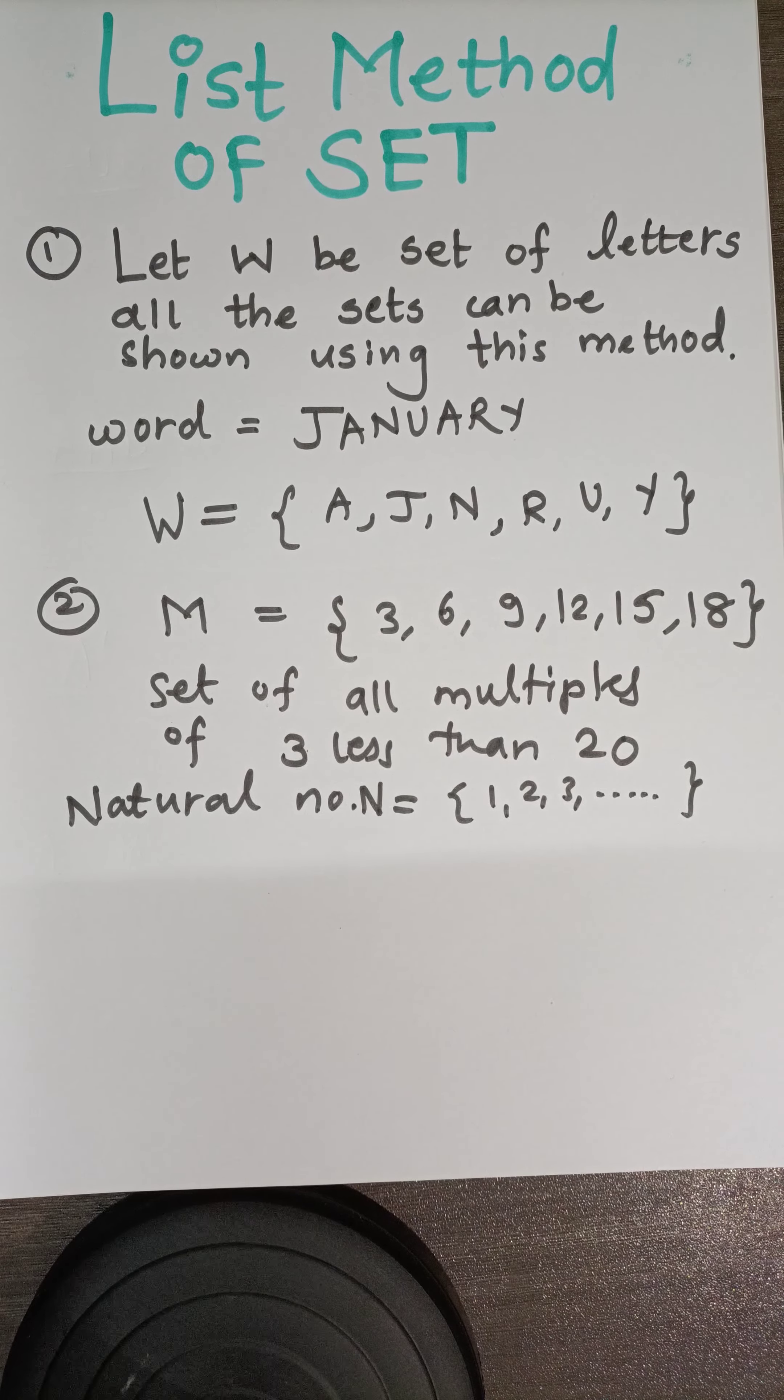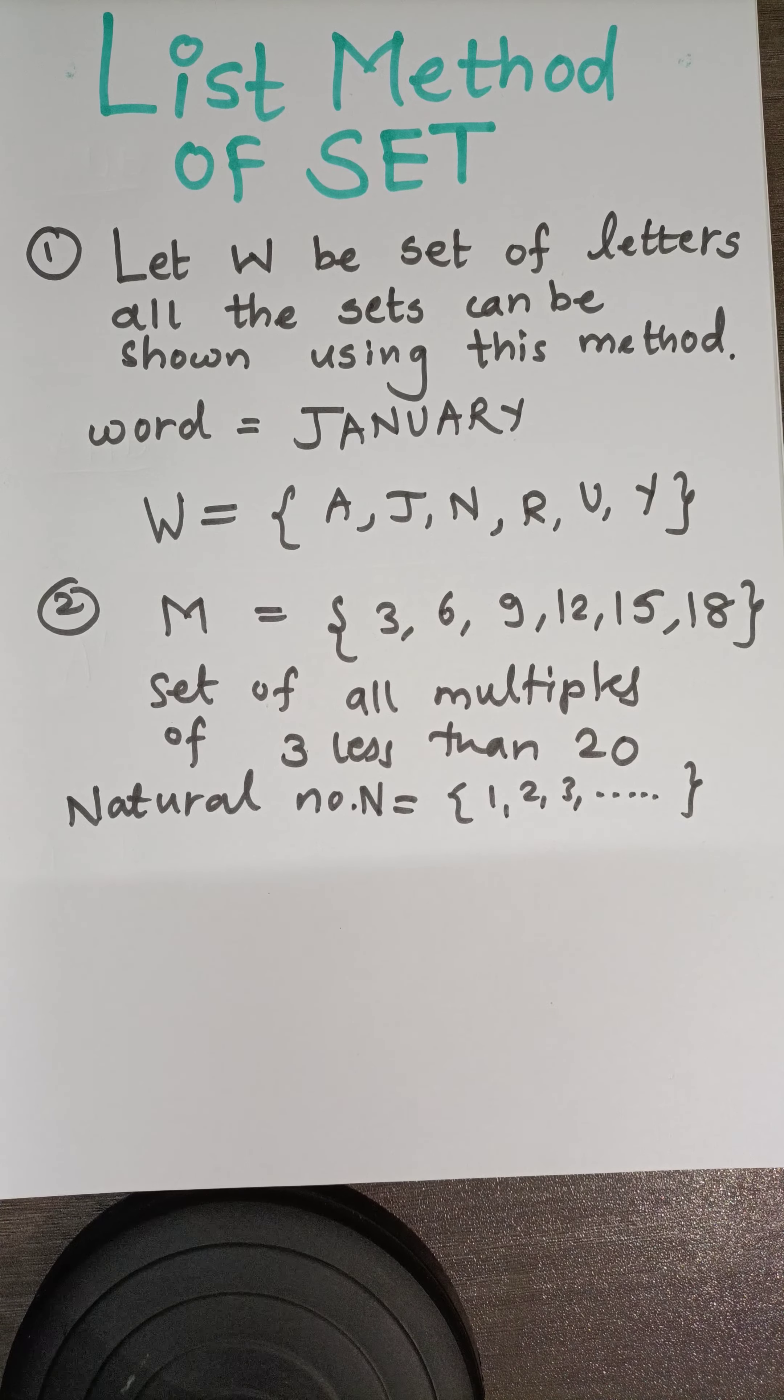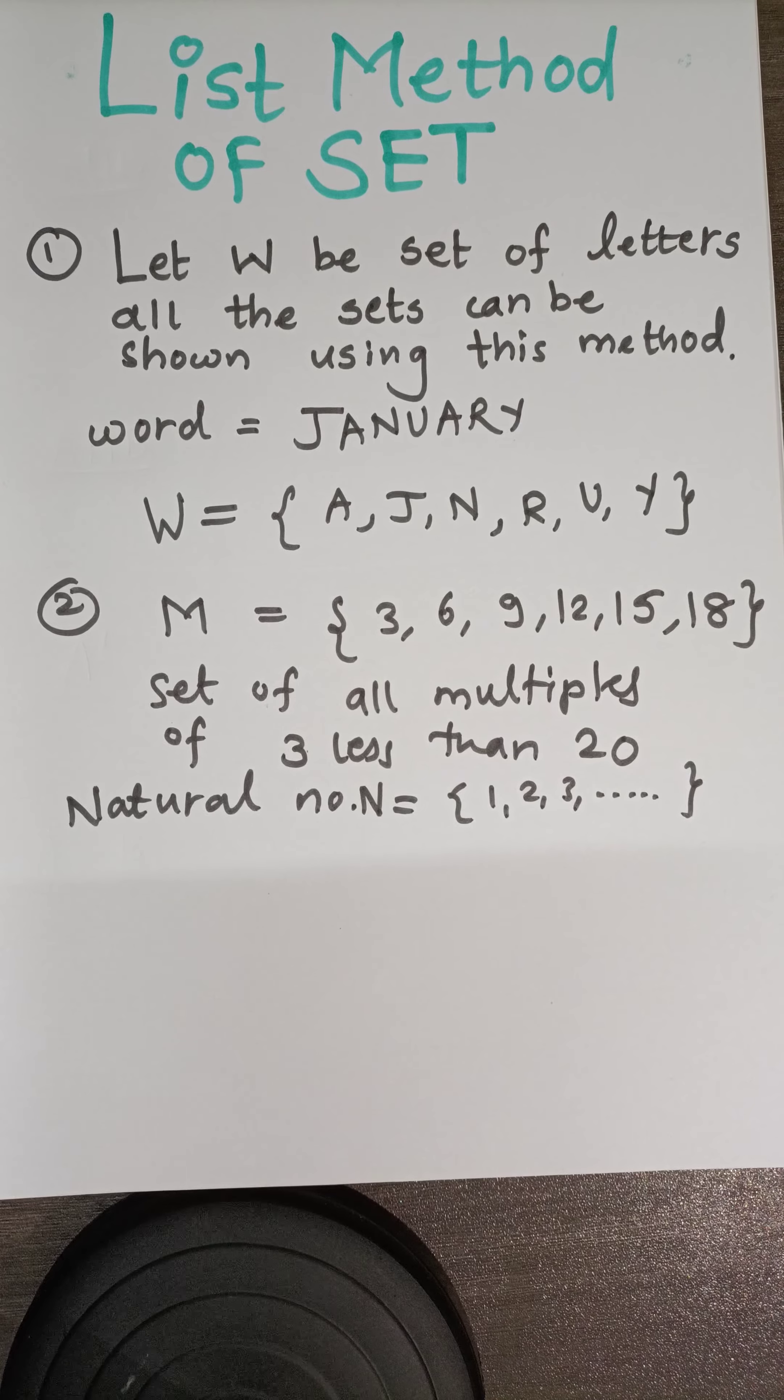So students, we say that the collection of objects is well-defined if we are having a particular collection of set, like we have a set of natural numbers, we have a set of whole numbers.